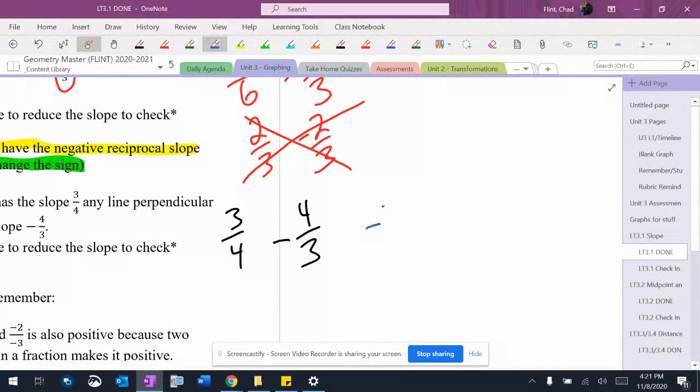If you had negative two-fifths, you flip the fraction and then change the sign. This one's negative, this one's positive, so it becomes positive five-halves.